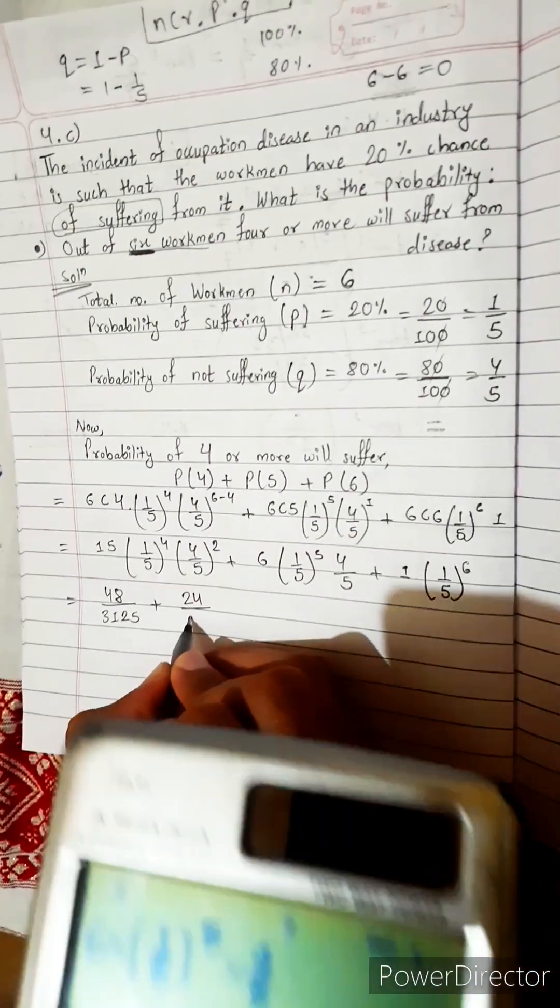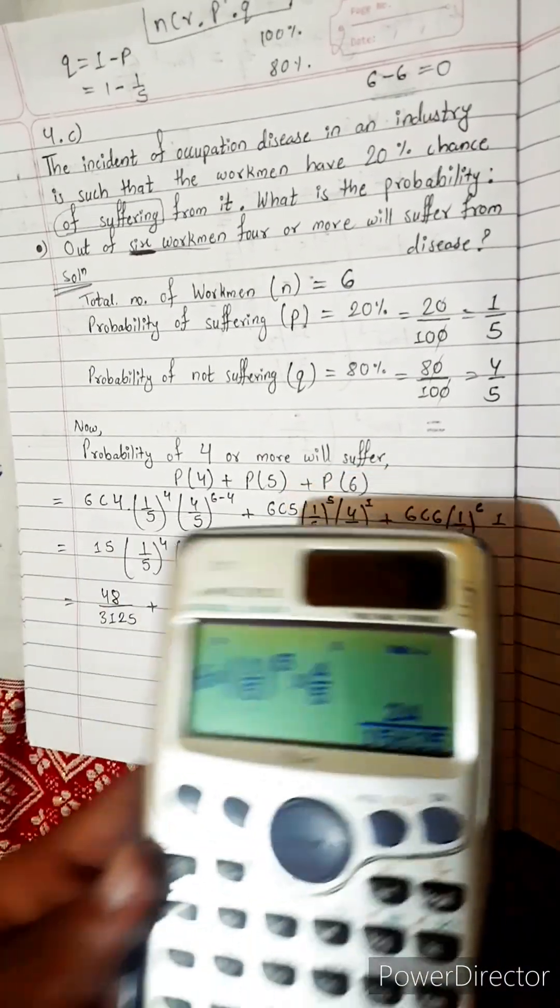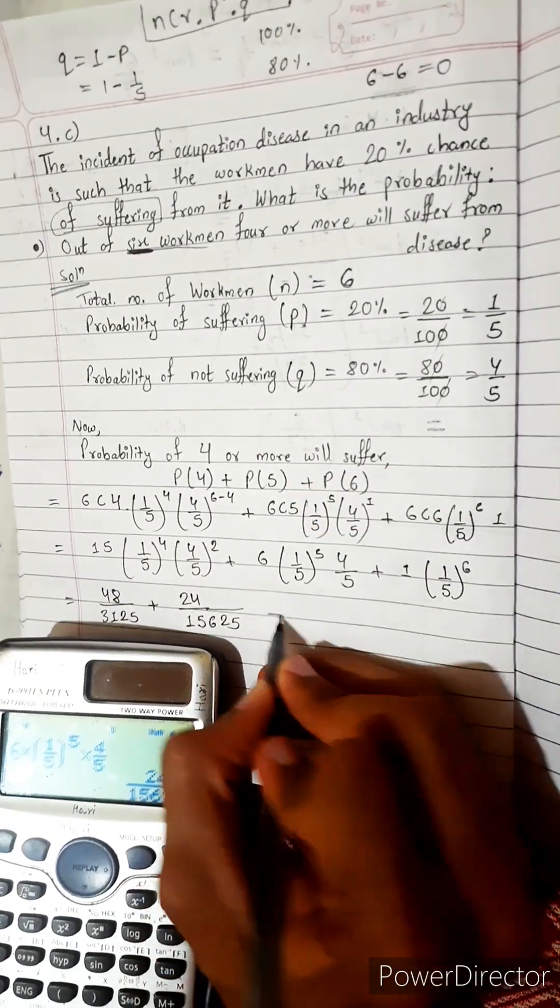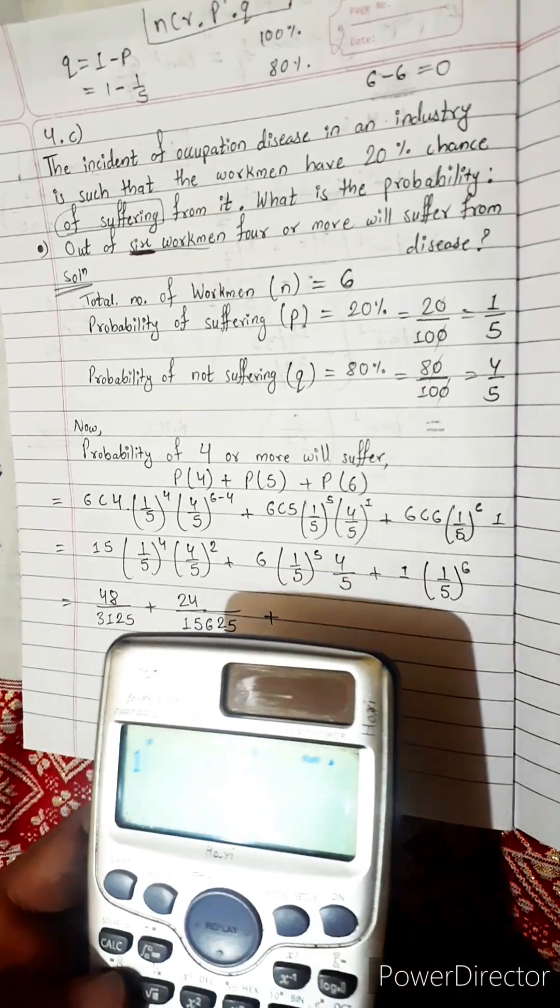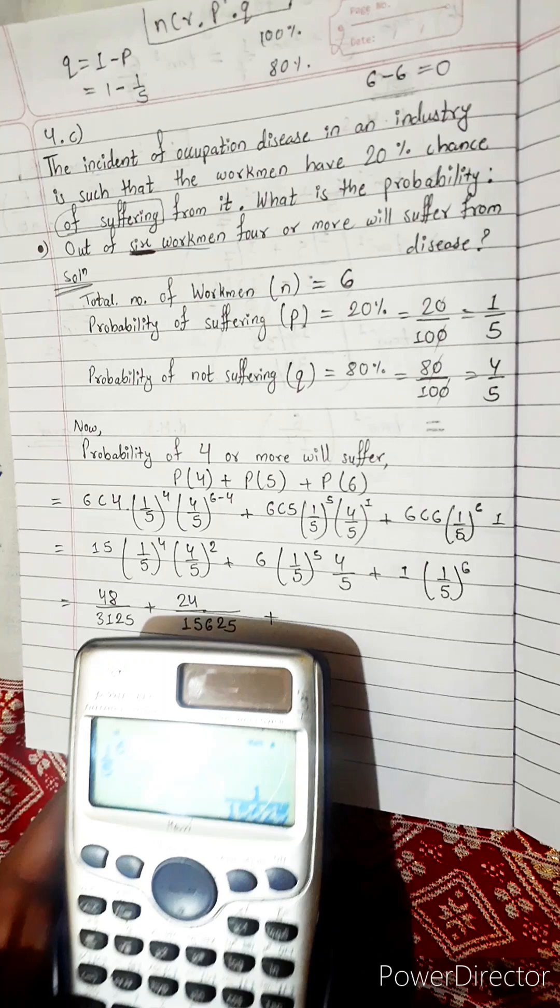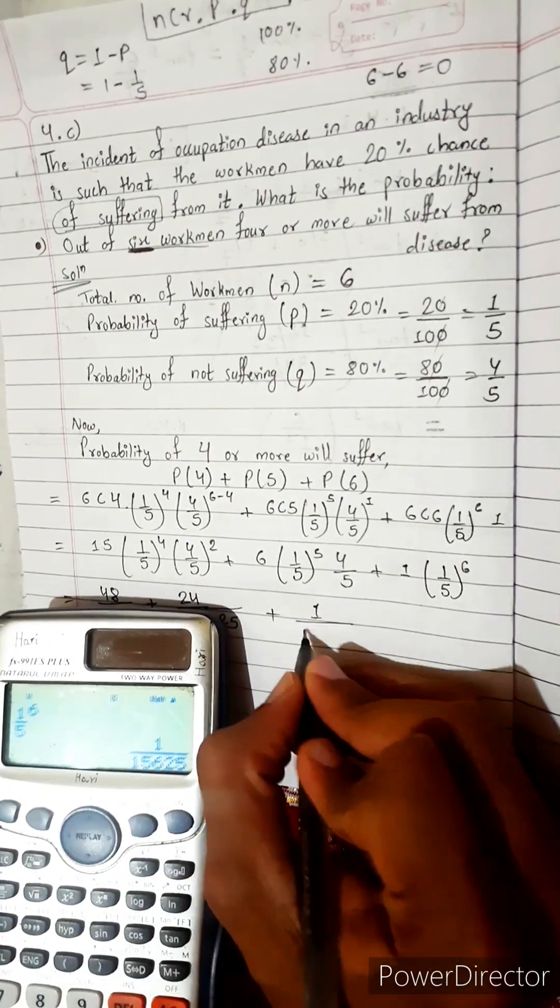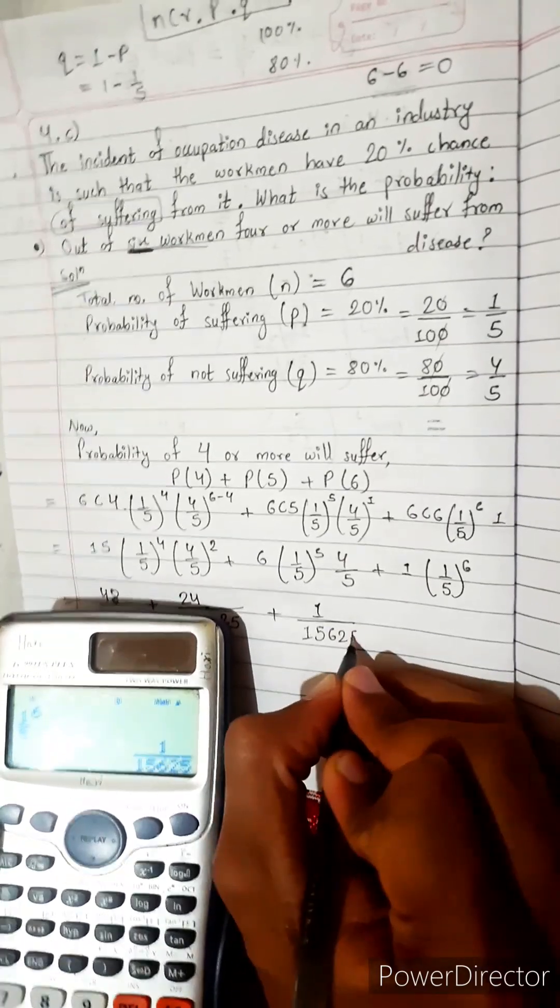So less probability. 24 divide by 15625. This probability is very very less. And 1 by 5 power 6, 1 by 15625. Very very less probability.